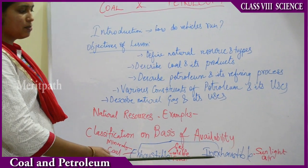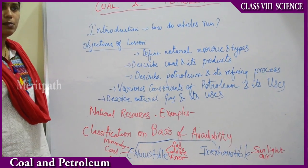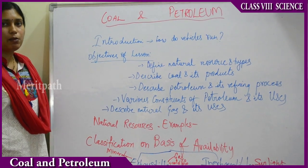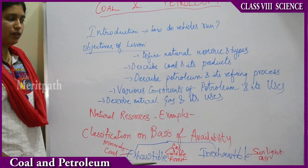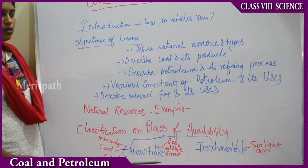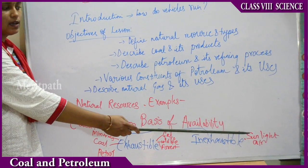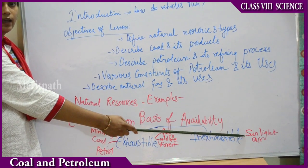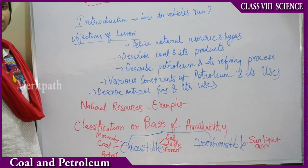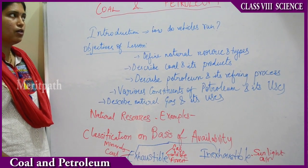Coming to inexhaustible natural resources — inexhaustible means unlimited. They will never be completed, finished, or go extinct. Examples of inexhaustible resources are sunlight and air, which will always be freely available and will never get exhausted.